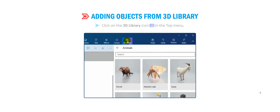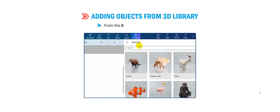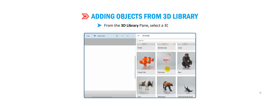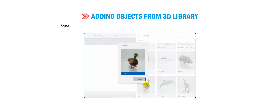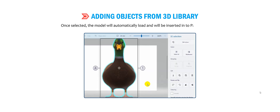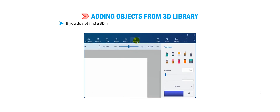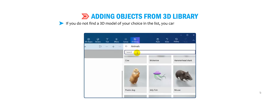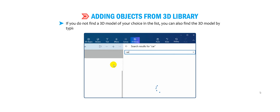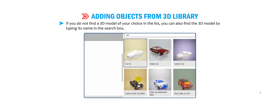Let us understand how to add objects from the 3D library. Click on the 3D library icon in the top menu. From the 3D library pane, select a 3D model. Once selected, the model will automatically load and be inserted into the Paint 3D canvas. If you do not find a 3D model of your choice in the list, you can also search for it by typing its name in the search box.